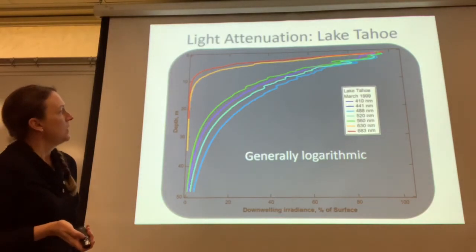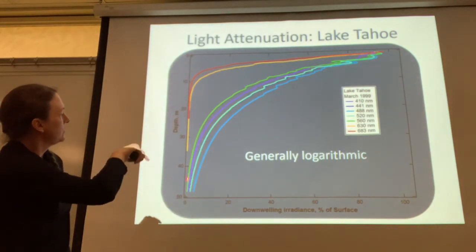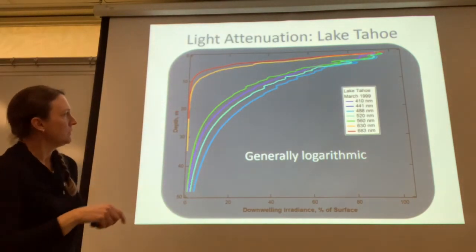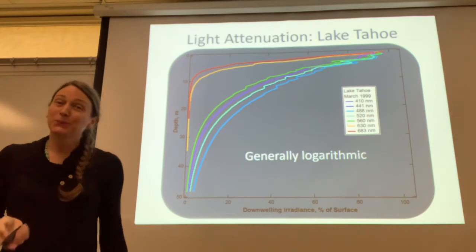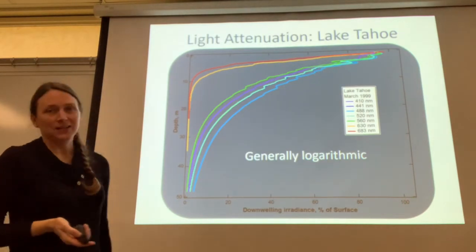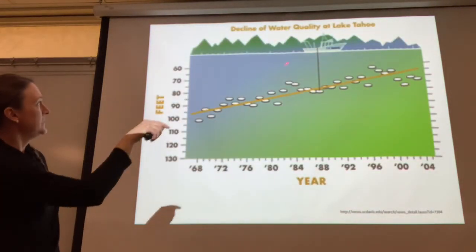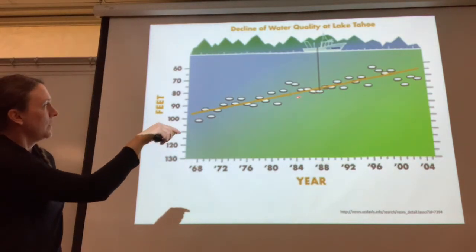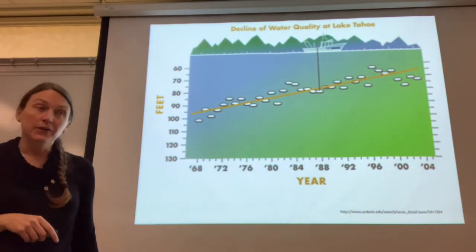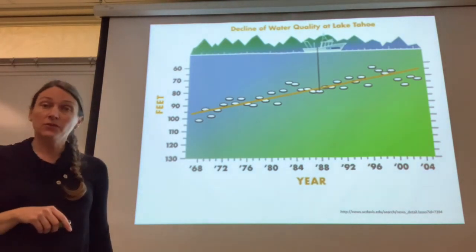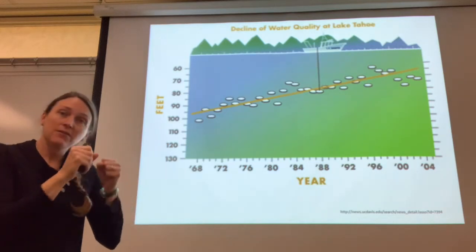Here are pictures of Lake Tahoe showing different wavelengths of light and their attenuation curves. Most wavelengths follow a generally logarithmic pattern, but red and orange light is lost much faster than blue light — which is partly why Lake Tahoe and Crater Lake appear so blue. You can also see that the Secchi depth has changed considerably over time; unfortunately, Lake Tahoe has been losing water clarity.